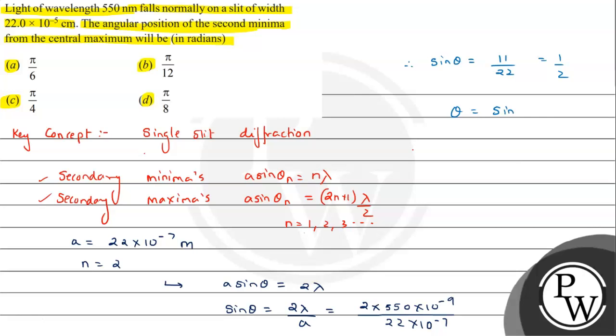So θ will be sin inverse of 1/2, which corresponds to 30 degrees, that is π/6 radians. From this we can say option a is the correct answer for this question. I hope you understood the solution. All the best.